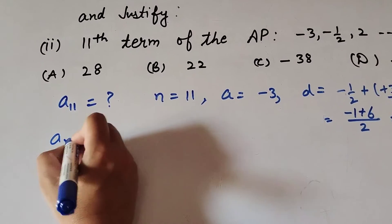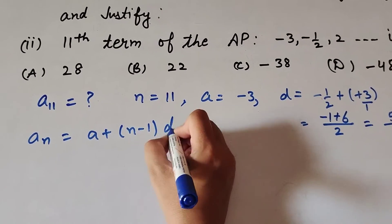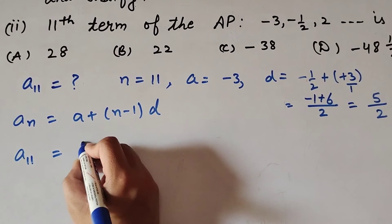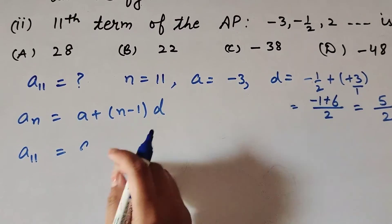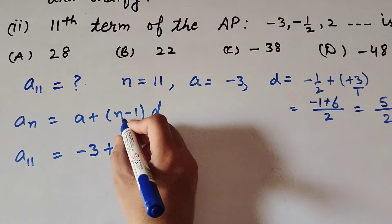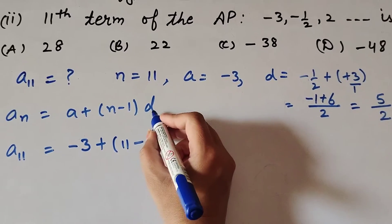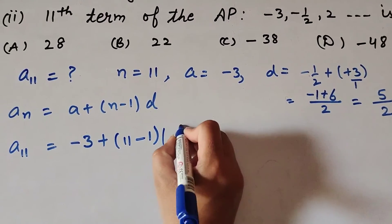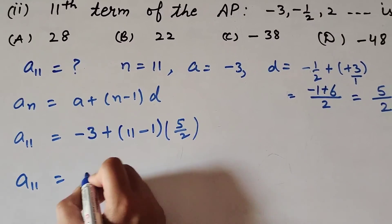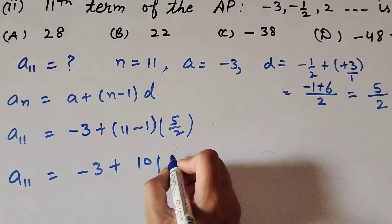Using the formula aₙ = a + (n − 1)d to find the nth term of the AP: a₁₁ equals the first term a, which is minus 3, plus (n − 1) where n equals 11, so that is 10, multiplied by d which is 5/2. So a₁₁ = −3 + 10 × (5/2).